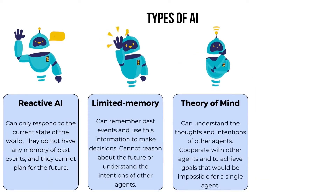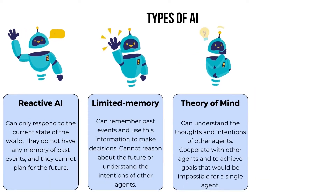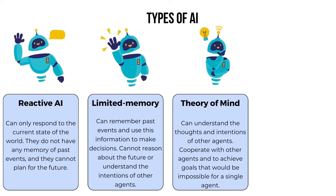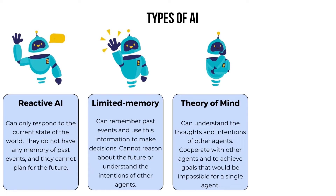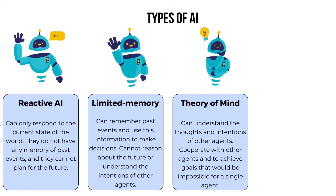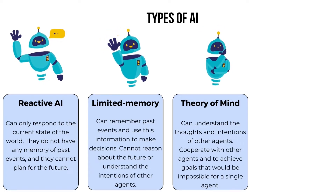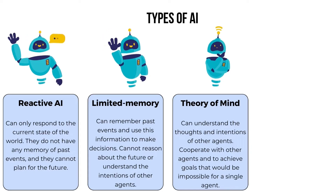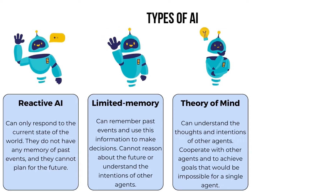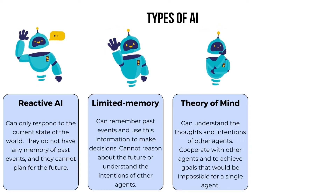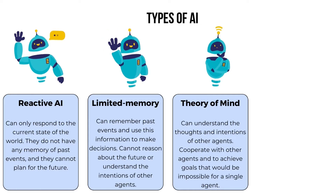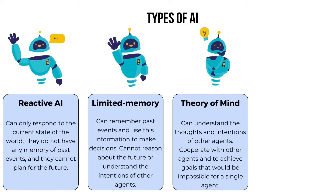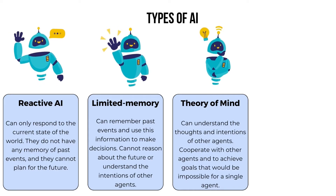The third type of artificial intelligence is theory of mind AI. These systems can understand the thoughts and intentions of other agents. This allows them to cooperate with other agents and to achieve goals that would be impossible for a single agent.